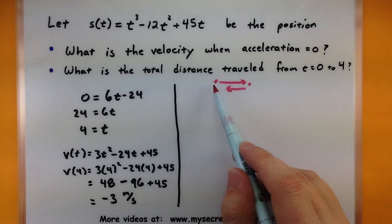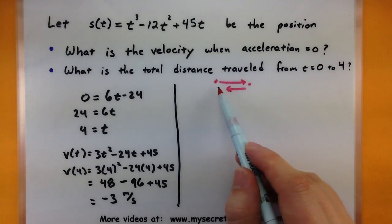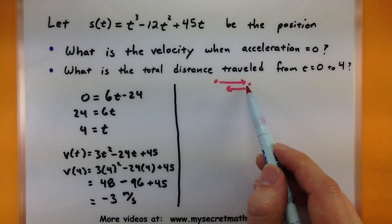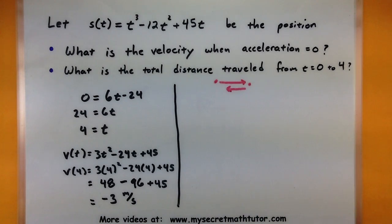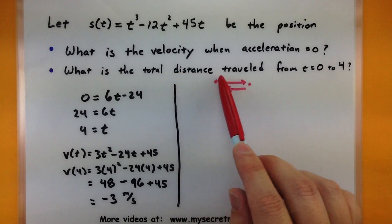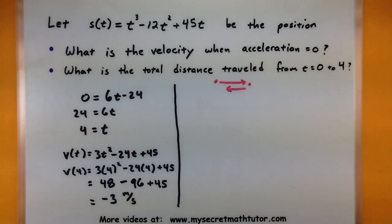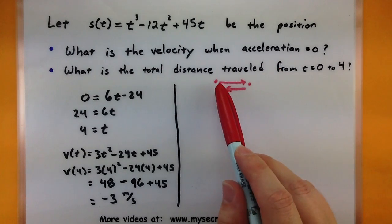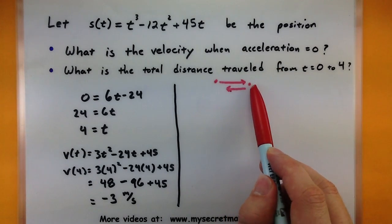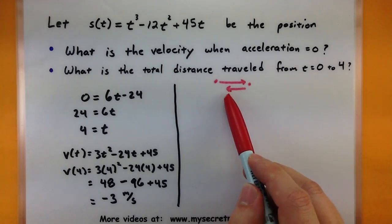So I would want the total distance, like this distance plus this distance, and my position function won't necessarily give me that directly. Because if I just took time zero and time four, it might not be enough. It might not actually count there and back again for my distance. So the first thing I need to check is, is there any time along the way does my particle change direction?